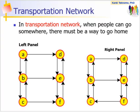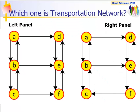So let's start. In transportation network, when people can go somewhere, there must be a way to go home. Now, which of the following is an example of transportation network and why?